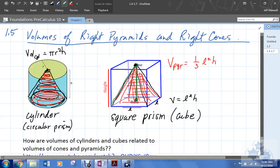it's the overall height. So the volume of the pyramid is one-third the area of the base times the height. And same over here, the volume of a cone is one-third pi r squared h.